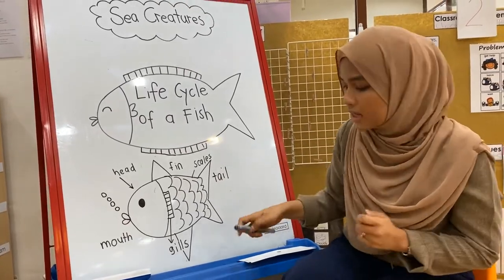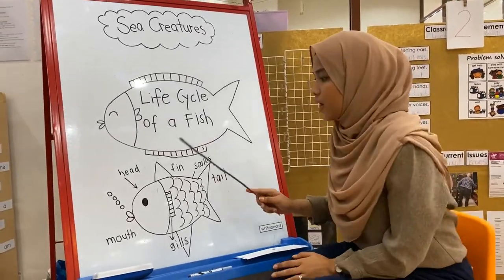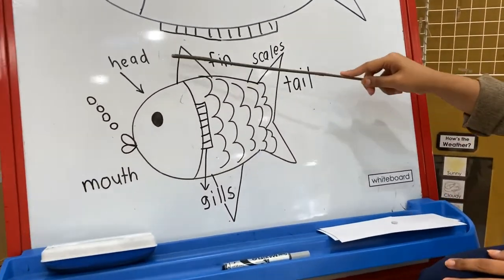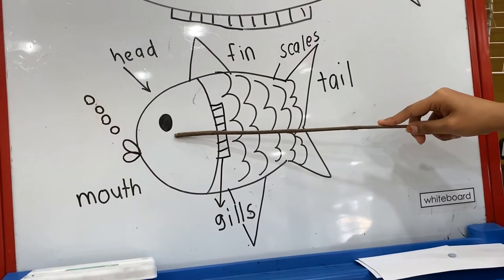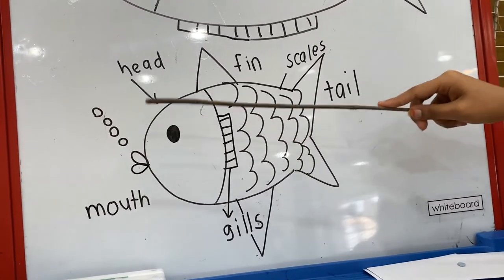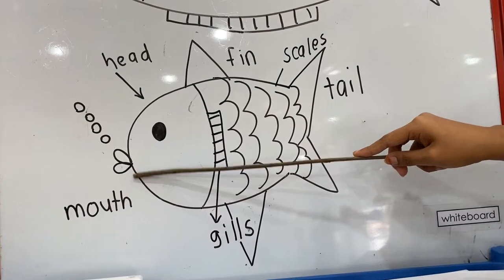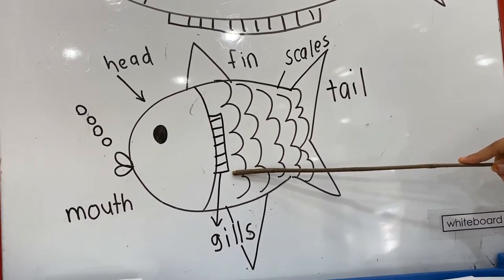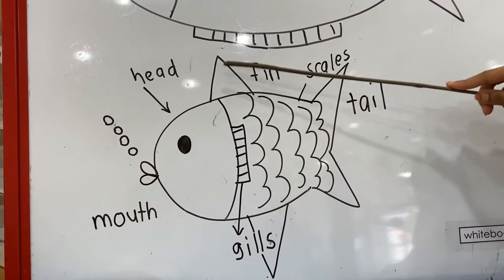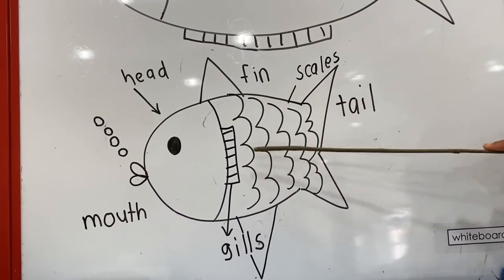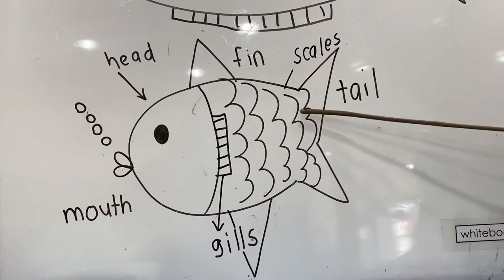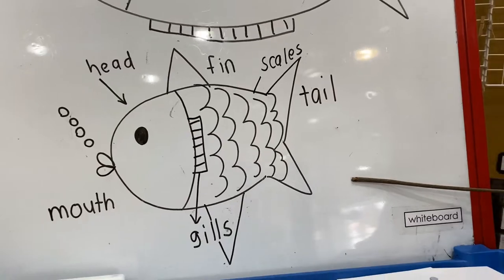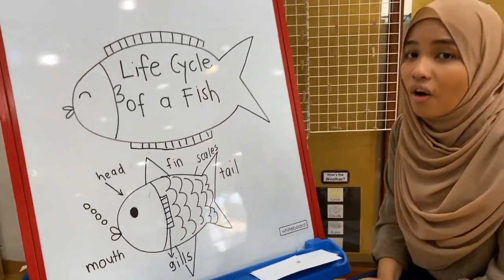Now you are going to name me the parts of the fish on your own. Ready? Let's start with the... good job, the head. Moving on to the... this is the eyes. Very good. The mouth. What is this, friend? Yes, the gills. This one — very good, fin. And what is this on the body? The scales. And lastly, this is the tail. Very good. And these are the parts of a fish.